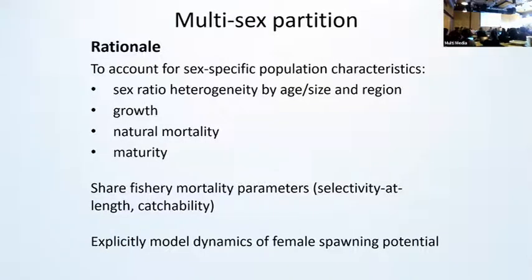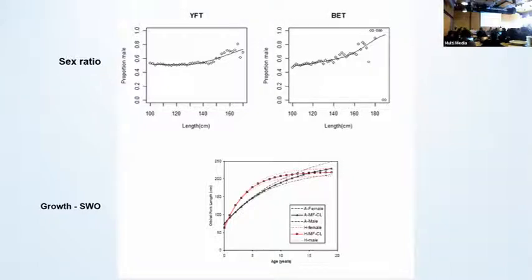Moving on to the multi-sex partition. To account for sex, there are some clear benefits from modeling the gender partition to describe sex-specific processes such as dimorphism, natural mortality, and maturity. By sharing the parameters such as selectivity, catchability, and fishing mortality, you can estimate some of the spatial heterogeneity in the population by sex and age. Some examples of these characteristics can be seen in the WCPO tunas where sex ratios may be different with respect to fish size. And in the case of swordfish, the difference between the dotted lines shows growth for males and females — so there are some benefits in being able to incorporate these explicitly in the model using the sex partition.